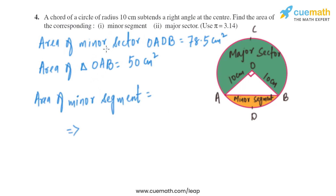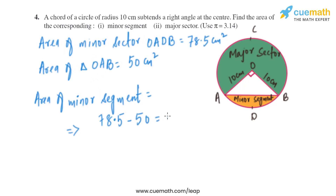We have the area of the minor sector as 78.5 square centimeters and the area of the triangle as 50 square centimeters. So the area of the minor segment is 78.5 minus 50, which equals 28.5 square centimeters. That is the area of the minor segment ADBA.